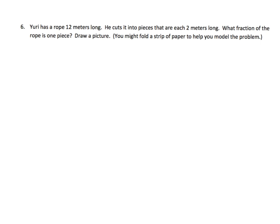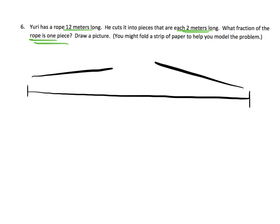The last problem: Yuri has a rope 12 meters long. He cuts it into pieces that are 2 meters long. What fraction of the rope is one piece? Draw a picture. Here's our rope — 12 meters. Each piece is 2 meters long, so 12 divided by 2 equals 6, meaning we're going to have six pieces of rope.